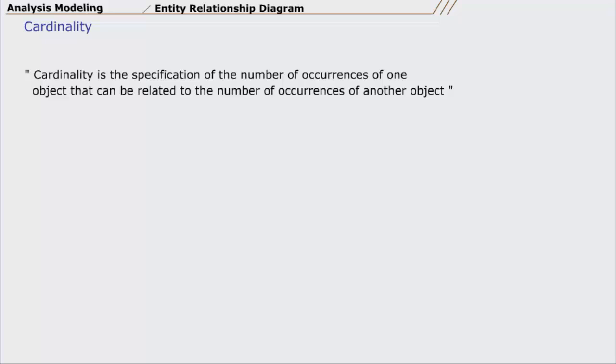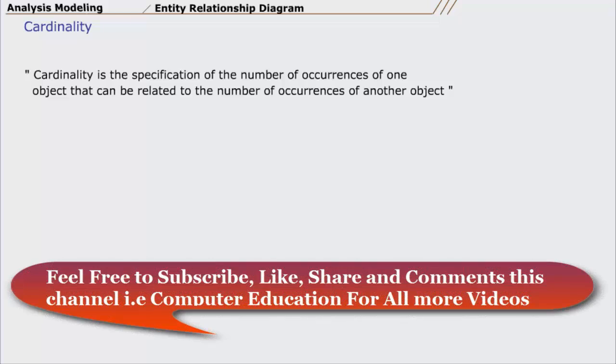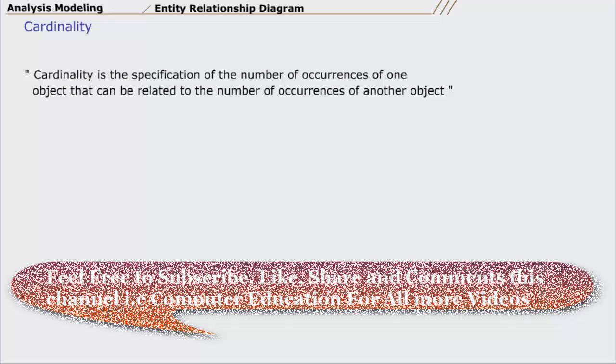Cardinality is usually expressed as simply one or many. Taking into consideration all combinations of one and many, two objects can be related as: